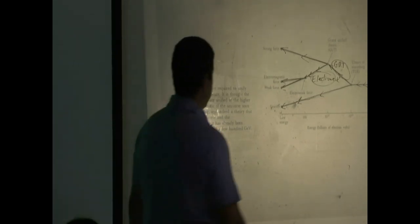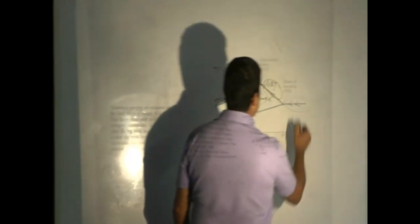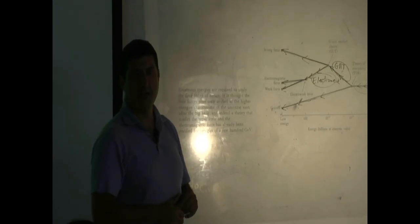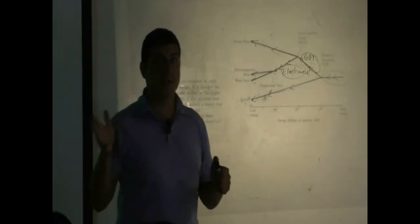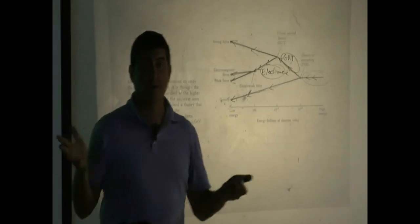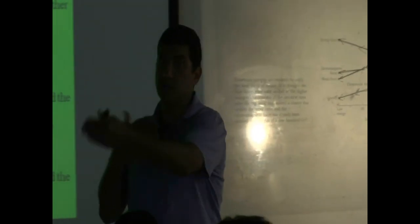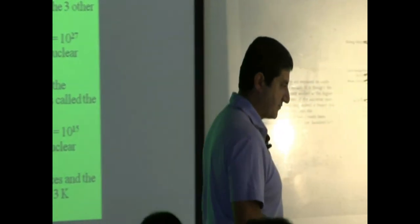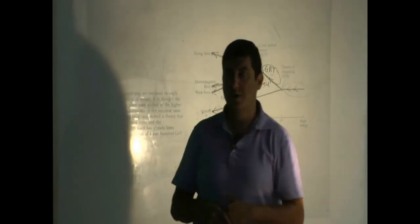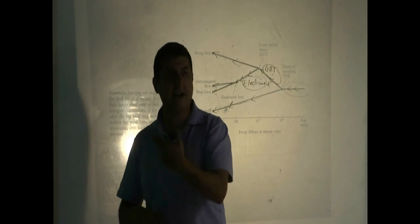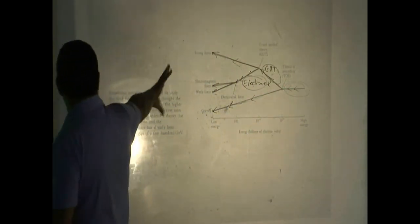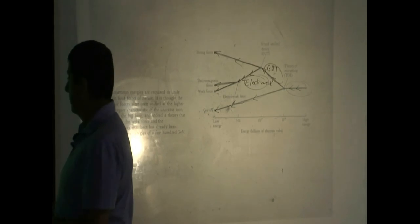We haven't gotten there yet, but we're going to produce the energies of the GUT force — understanding what particles existed at those high energies. And eventually, if we get there, we'll produce the energies of the beginning of the universe and see what particles exist there. Last year, we did confirm a new particle — the Higgs particle, called the God particle. As you go on in time, you're going to see discoveries of new and new particles as we reach higher and higher energies.